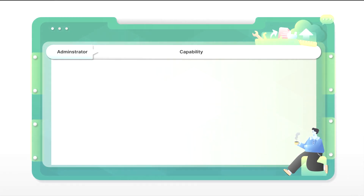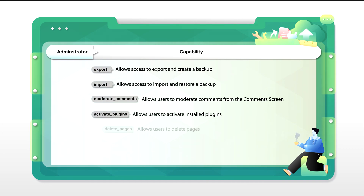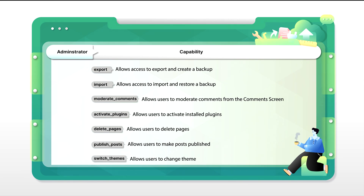So why is this happening? Each WordPress user is allowed to do certain actions on the site. These abilities are called capabilities. Sometimes when you use certain plugins or themes, they remove some capabilities. In our case, it means you have lost import capabilities, export capabilities, or both. Therefore, the solution would be to restore any lost capabilities to your admin user.